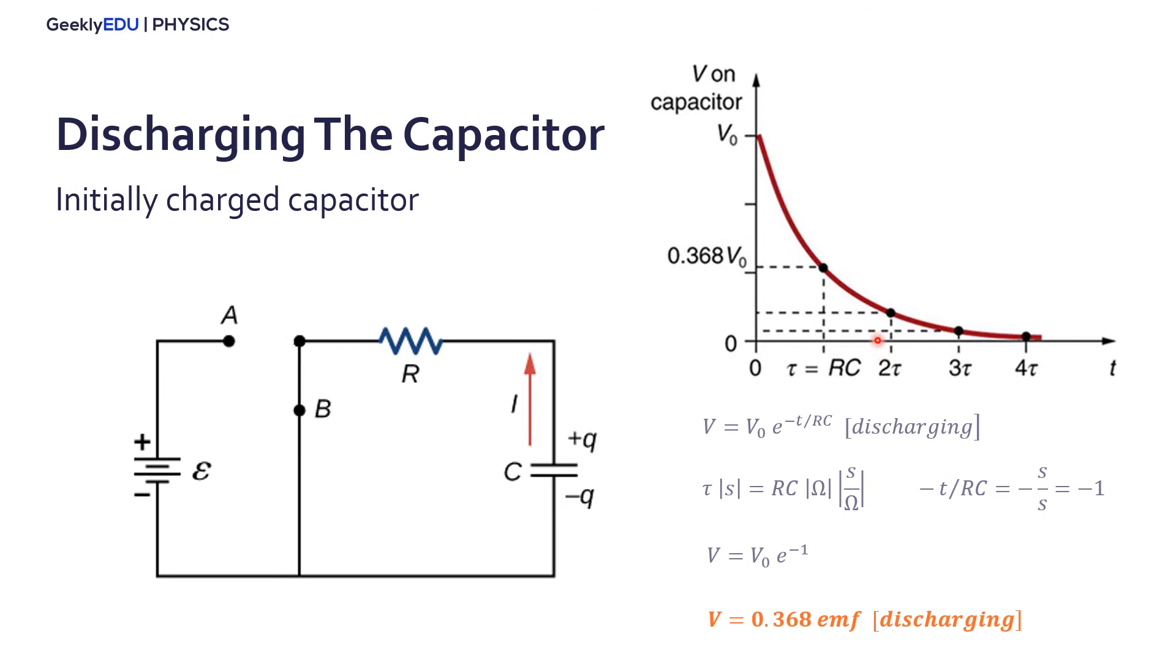In other words, at one time constant, the capacitor will discharge this amount, 0.368 times the initial voltage. After two time constants, the capacitor will discharge 0.368 times the remaining charge, the remaining voltage. And it goes until it's fully discharged.